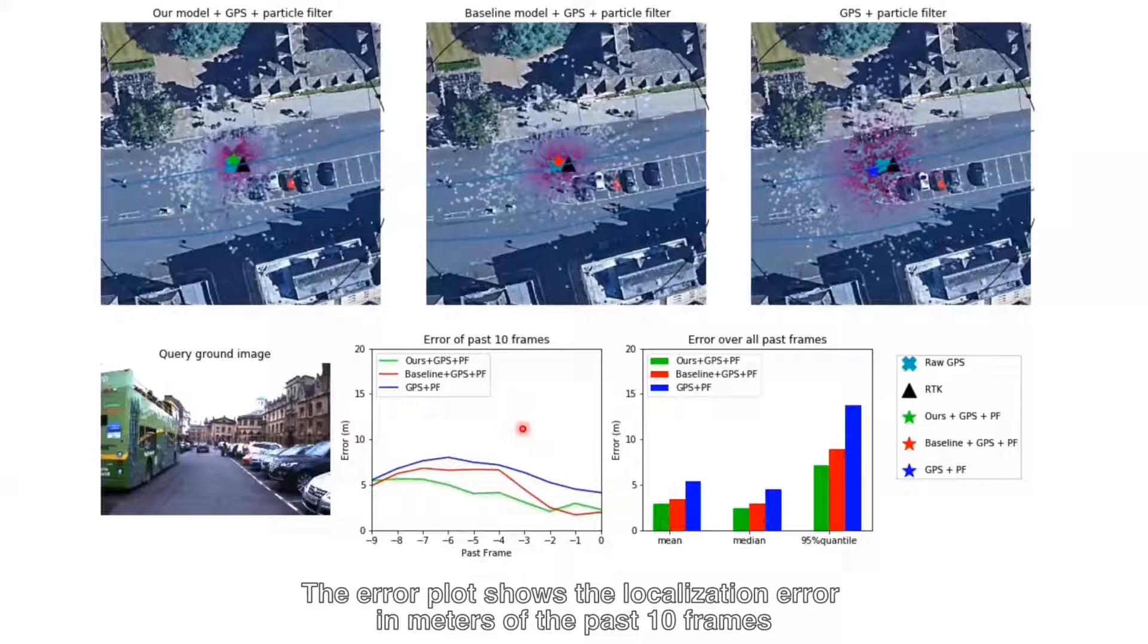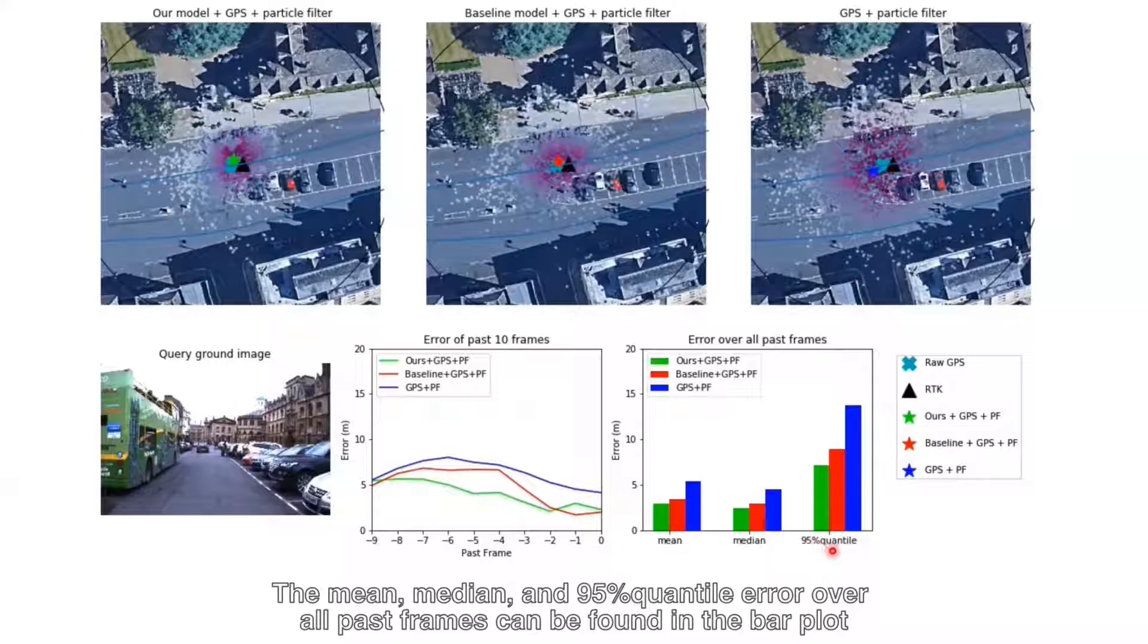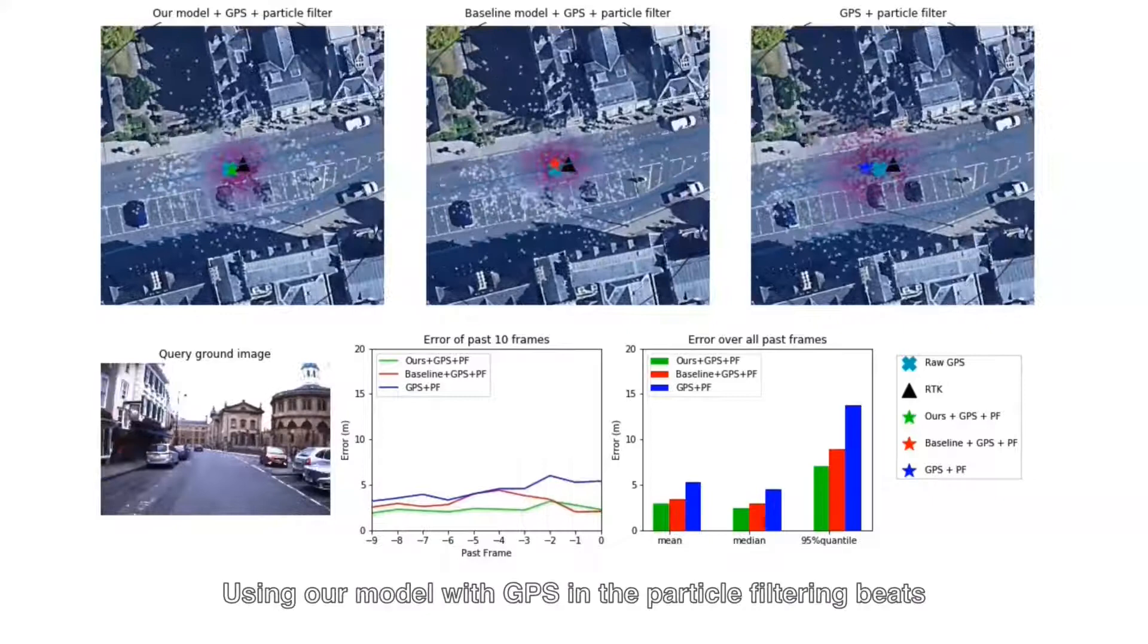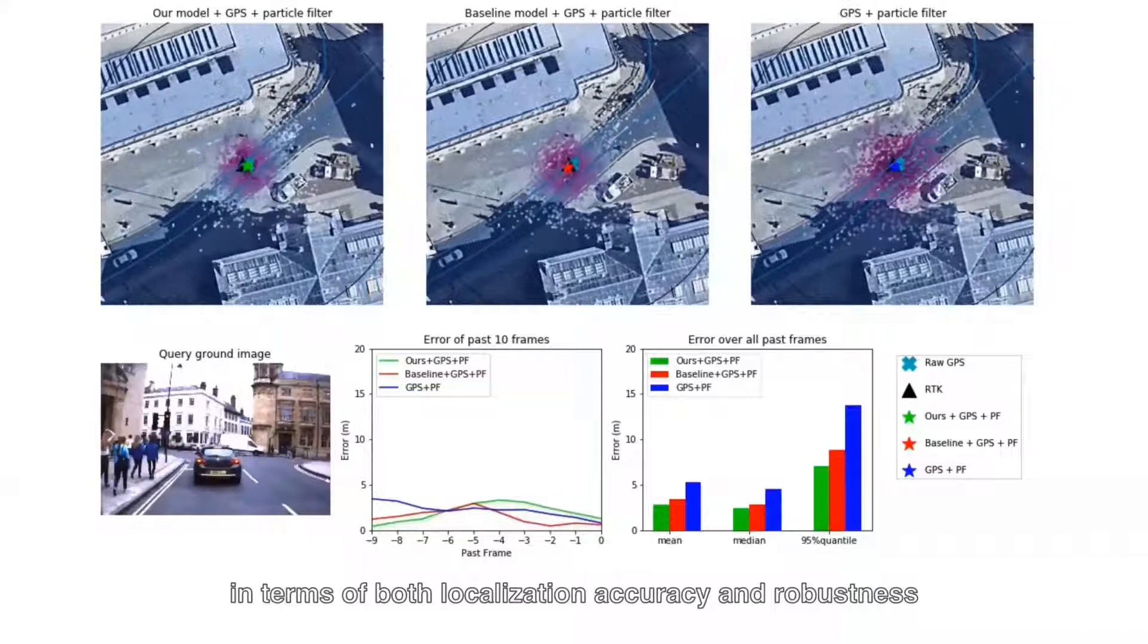In terms of the numbers of the past 10 frames, the mean, median, and 95 percentile error over all past frames can be found in the bar plot. Using our model with GPS in the particle filtering beats using the baseline with GPS or using GPS only in terms of both localization accuracy and robustness.